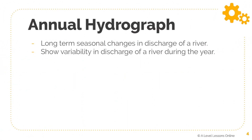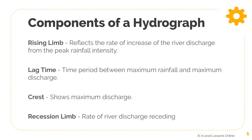On the other hand, the annual hydrograph refers to the long-term seasonal changes in discharge of a river, usually across the year. It shows variability in discharge throughout the entire year — for example, whether March has a higher discharge compared to December. This can be used to assess which months tend to experience greater discharge due to higher rainfall or other factors. Just remember: storm hydrograph is short-run, annual hydrograph is long-run.